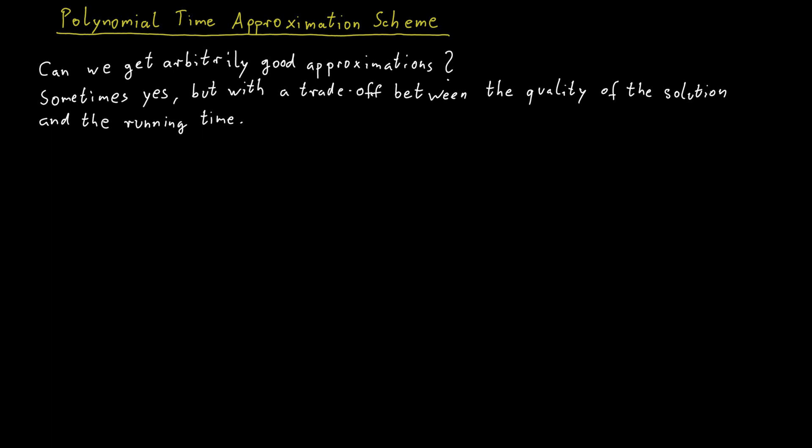So there's a certain trade-off between running time and the quality of the approximation you get. And if you request an approximation that is too small, too close to 1, too close to the optimum, then in that scenario, in practice, it might not be really feasible anymore to run this algorithm. Although theoretically, it's still an efficient approximation algorithm.